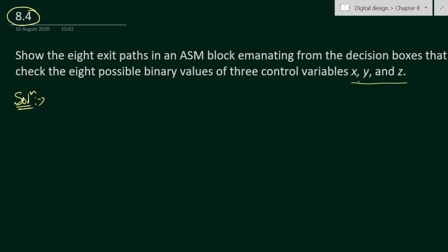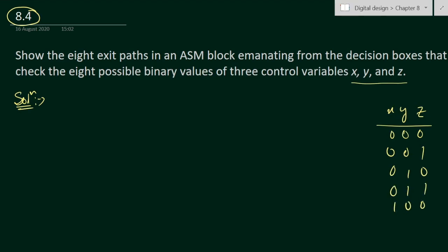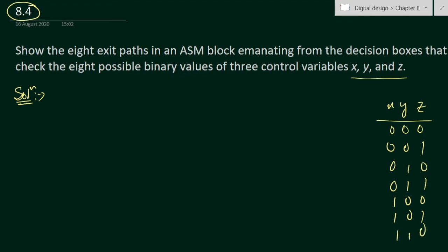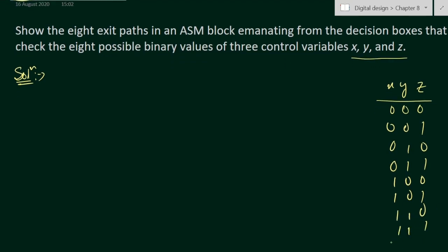Using three control variables X, Y, Z, we will have eight combinations: 000, 001, 010, 011, 100, 101, 110, and 111. These are the eight possible binary combinations.